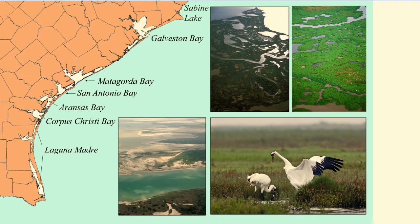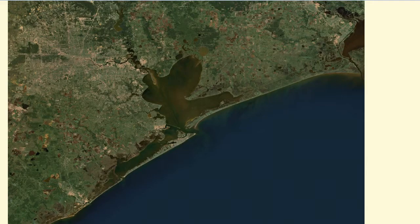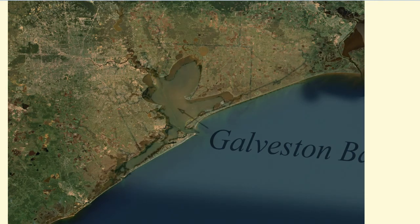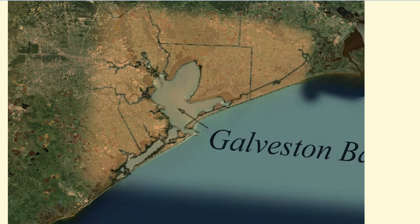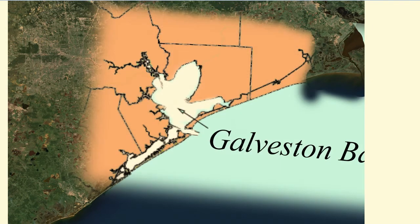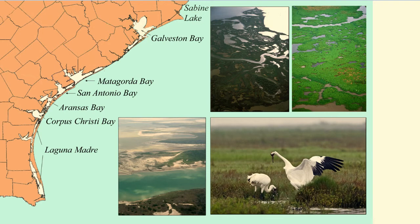The largest delta in the Gulf is formed by the Mississippi River in Louisiana. If you traveled along Texas's almost 400 miles of coastline, you'd find over 2.6 million acres of estuary habitat and seven major bays. Each bay is very different from the other, and these differences give rise to the high biodiversity of aquatic ecosystems along the Texas coast.